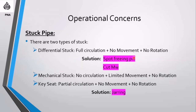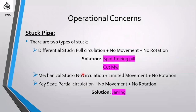The freeing pill for differential stuck pipe typically consists of diesel, lubricant, and water at the required mud weight. Normally the freeing pill is made at the same mud weight as the current mud system.